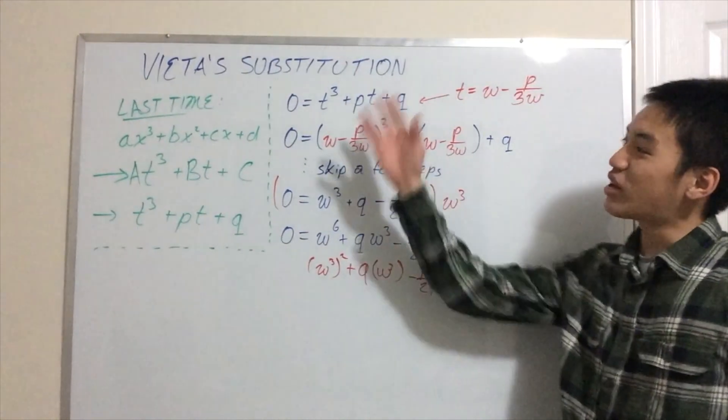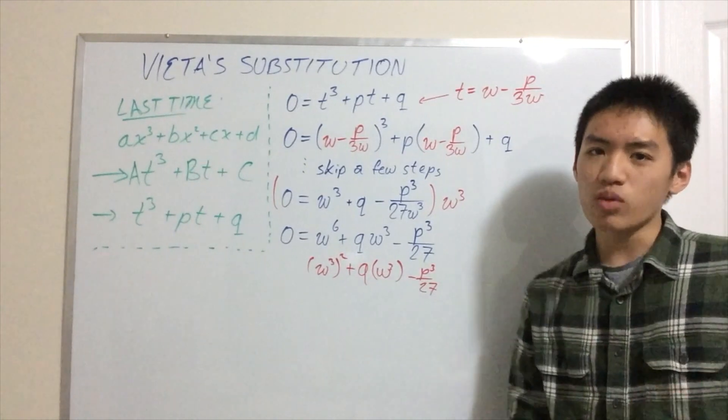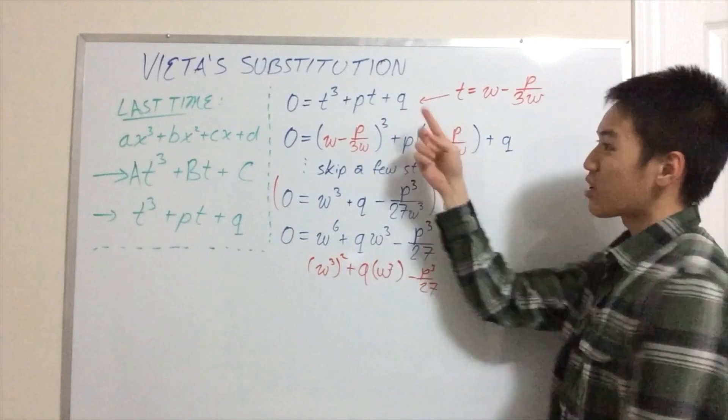Hello, today we're going to look at Vieta's substitution. We use Vieta's substitution to solve cubic equations, but specifically in the form 0 = t³ + pt + q.